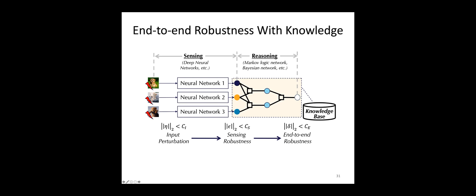One very nice property of this pipeline is that not only can we improve the robustness of the machine learning pipeline empirically, but we can also certify robustness theoretically. Given the perturbation magnitude of the input, we can provide a bounded output range of the neural networks as sensing robustness. Based on this output range, we can still certify the robustness of the reasoning pipeline, thereby certifying end-to-end robustness given input perturbation and obtaining the output range of the final prediction.